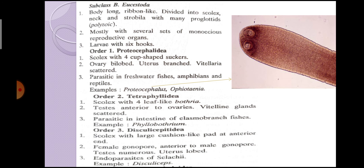Next order is Order Tetraphyllidea. The scolex has four leaf-like bothria. Testes are anterior to ovaries. Vitelline glands are scattered. They are parasitic in the intestine of elasmobranch fishes. Example is Phyllobothrium.